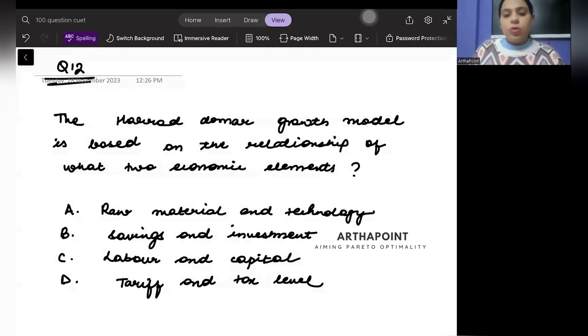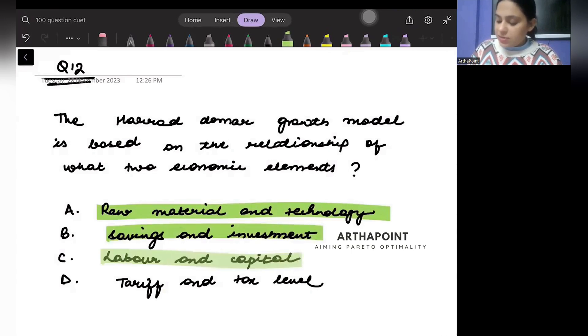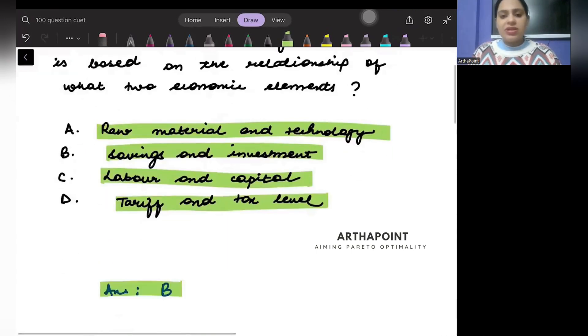The Harrod-Domar growth model is based on the relationship of what two economic elements? What options are given to us? Raw material and technology, savings and investment, labor and capital, tariff and tax rate.